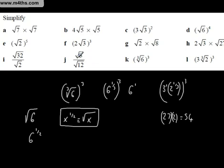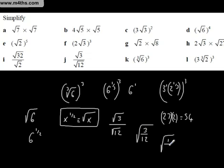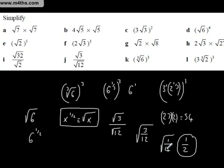This is what I spoke of before. We can write root 3 over root 12 in the following way — we can write it as the root of 3 over 12. The root of 3/12 simplifies to the root of 1/4, which of course gives us 1/2. All we're doing is making this easier; we can put it all under the root, simplify, and use basic arithmetic to sort those problems out.